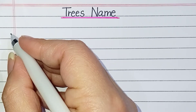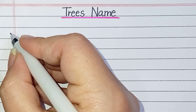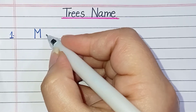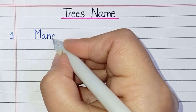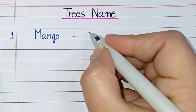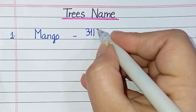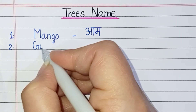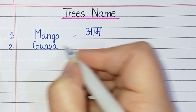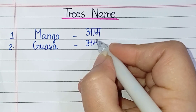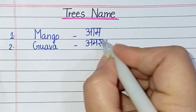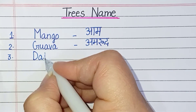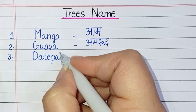Hello everyone, today we will learn and write tree names. Number one: M-A-N-G-O, mango, means aam. Number two: G-U-A-V-A, guava, means amrood. Number three: D-A-T-E P-A-L-M, date palm, means khajur.